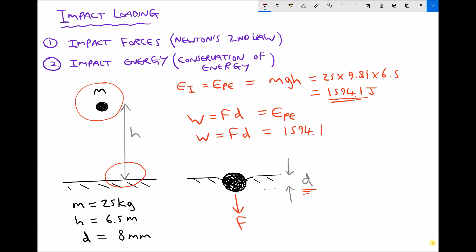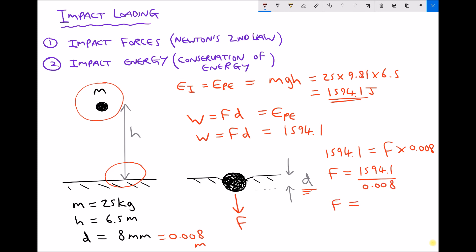Rearranging: 1594.1 = F × d, where the deflection d is 8 millimetres. Converting to metres: 8 mm ÷ 1000 = 0.008 m. Therefore the impact force F = 1594.1 ÷ 0.008, giving an impact force of 199,266 N, or approximately 199.3 kilonewtons.